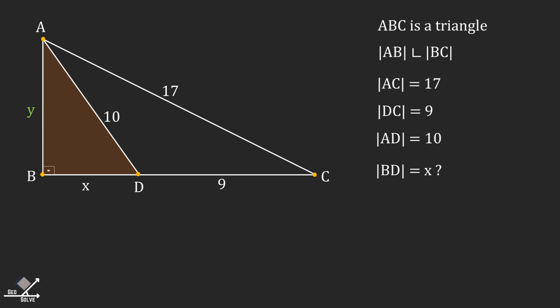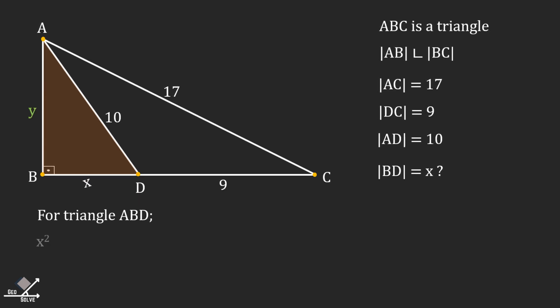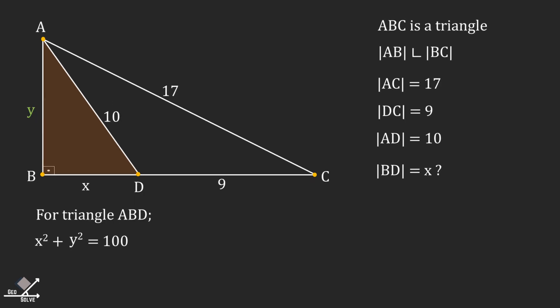So we can use the Pythagorean theorem to have an equation relating x and y. For triangle ABD, x squared plus y squared is equal to 10 squared, which is 100. Let's call this equation number one.